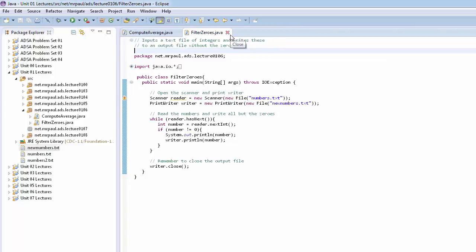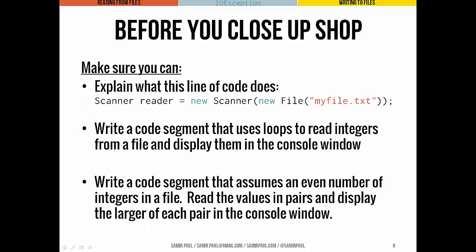Take a second and run these on your computer, play around a little bit. Before you close up shop, here's what you want to make sure you can handle: know what this line of code does and how to declare and instantiate a Scanner object that can read from a file and a PrintWriter object that can write to a file. Think about how you could write a code segment that uses loops to read integers from a file and display them straight to the console — nothing complicated, just read from a file and print to the console. As a third challenge, think about writing a code segment that assumes a file has an even number of integers, reads those values in pairs, and displays the larger one of each pair in the console window.